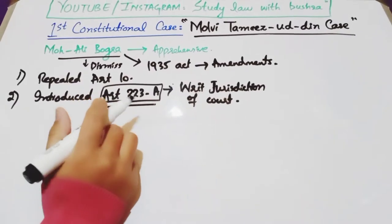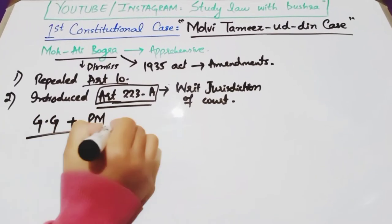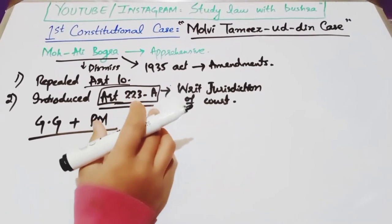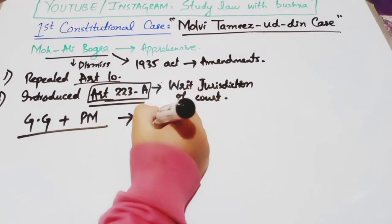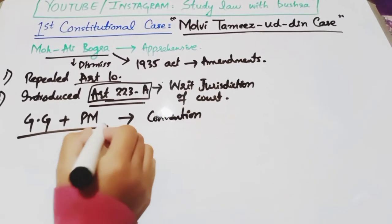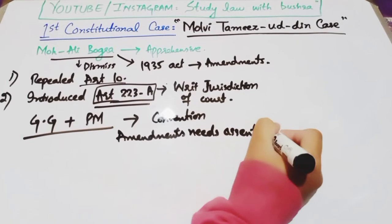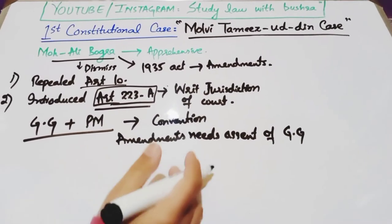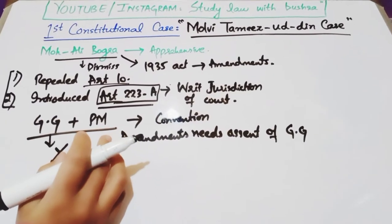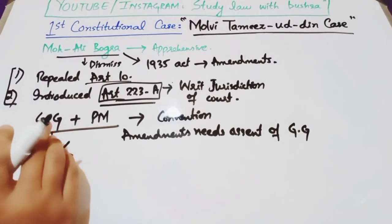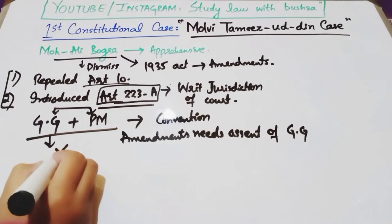اس وقت ایک convention تھی کہ جو بھی bill یا amendment ہو، اس پر governor general کی assent ضروری ہے۔ چونکہ محمد علی بوگرہ نے یہ دو amendments کرتے ہوئے governor general کی assent نہیں لی تھی، اس لیے governor general اور prime minister/constituent assembly کے درمیان controversies اور اختلافات پیدا ہوئے۔